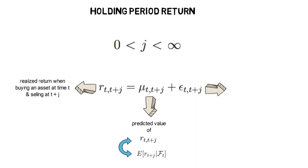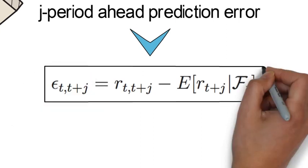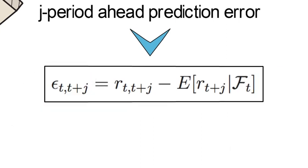And lastly, ε_{t,t+j} is the realized random J-period ahead prediction error, which we can also write as ε_{t,t+j} equals r_{t,t+j} minus the expectation of r_{t+j} conditional on F_t.